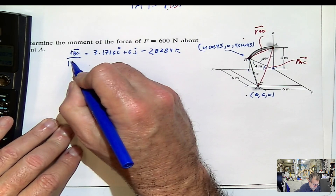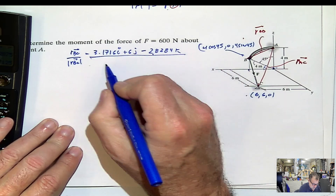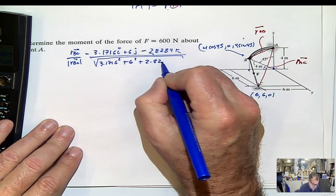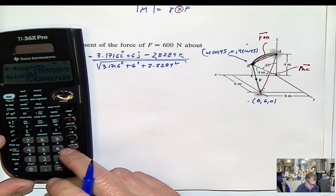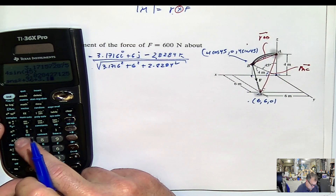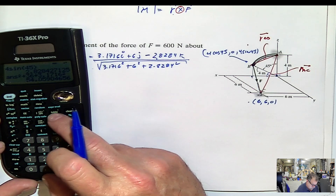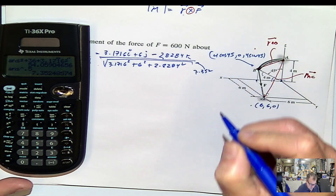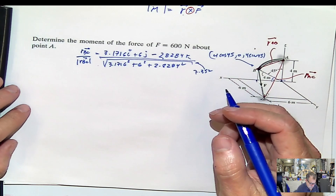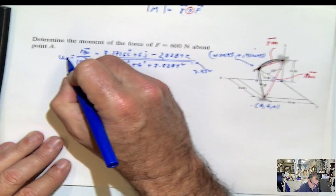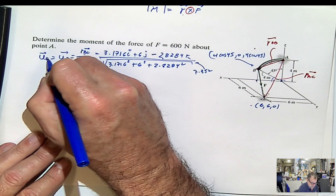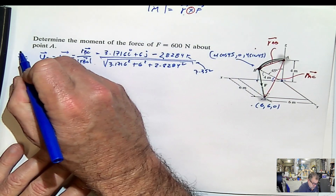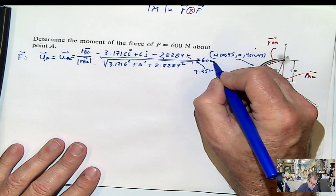Now we divide the position vector BC by its magnitude, which is the square root of 3.1716² plus 6² plus 2.8284². Taking the square root gives 7.352 — I'll save that value. This gives us the unit vector in the direction of BC, which is the same unit vector as the force. So to get the force vector, I multiply that unit vector by 600, which is the magnitude of the force.